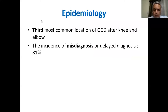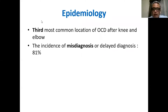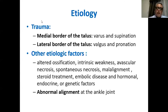For the epidemiology of osteochondral lesions of the talus, it is the third most common lesion after the knee and the elbow. However, this is very commonly misdiagnosed or undiagnosed — the rate of delayed or missed diagnosis is more than 80%. So 80% of osteochondral lesions of the talus can pass undiagnosed, because you need a very high index of suspicion to reach this diagnosis.